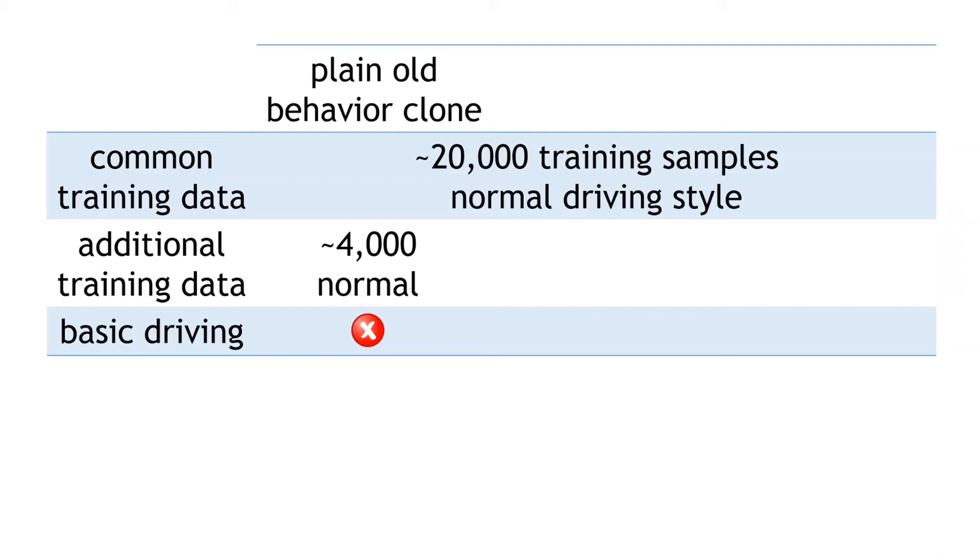Now for the two new policy models. The weaving trained policy and the noise trained policy. For the weaving trained policy, we combined the 20,000 images from the normal driving with the additional 4000 weaving images to train the policy. So how did the policy go at autonomous driving? Let's take a look.